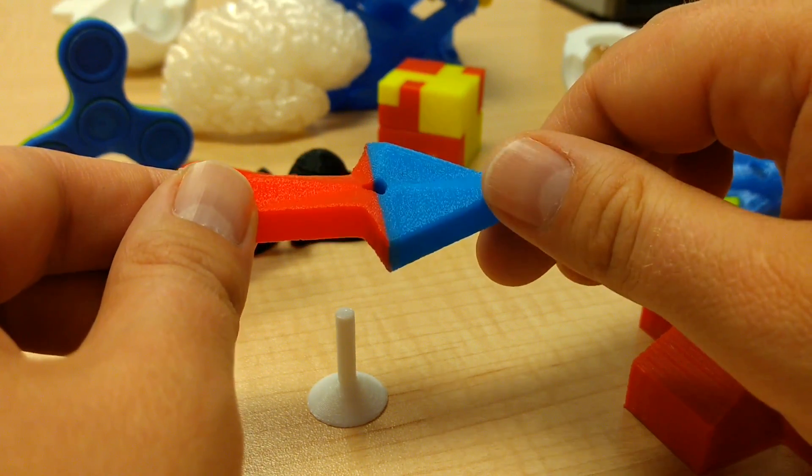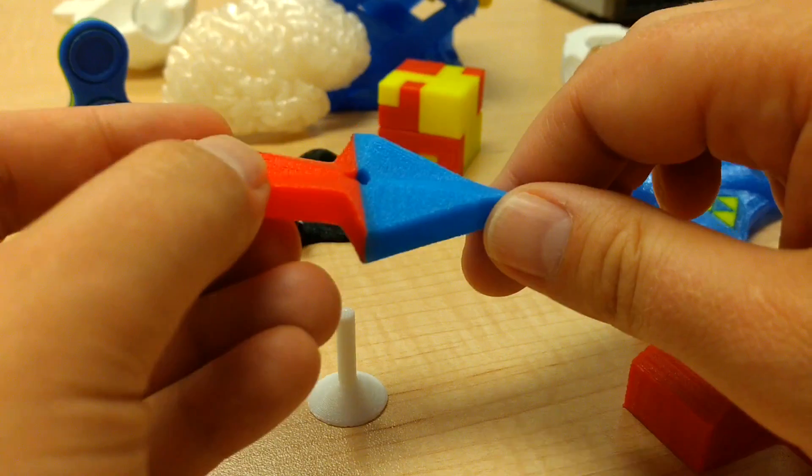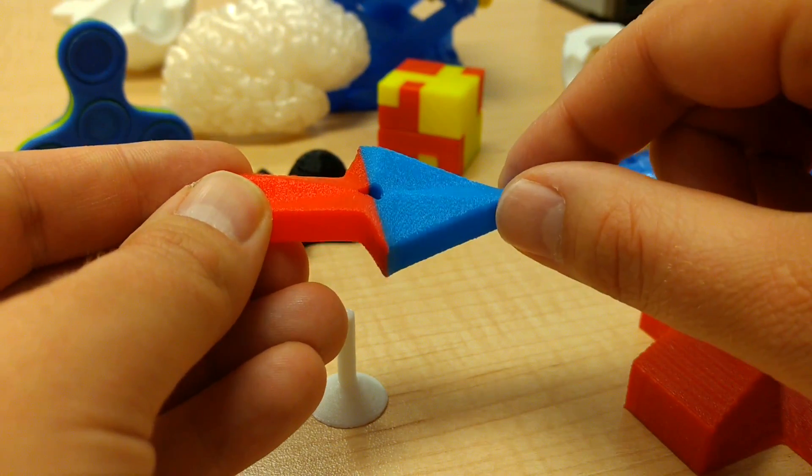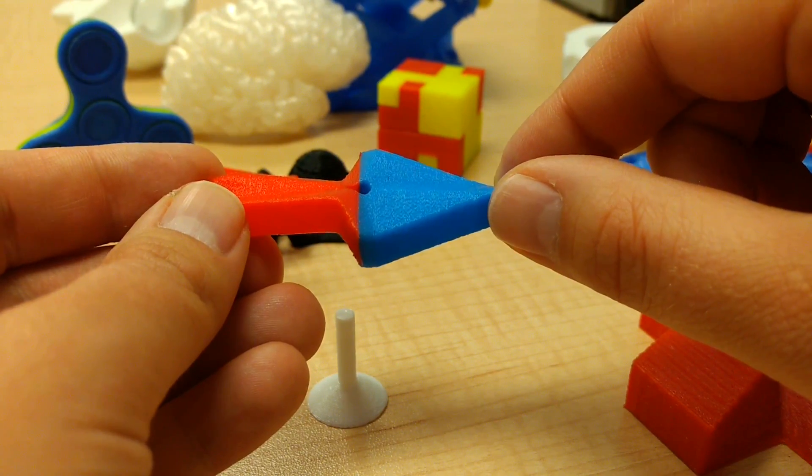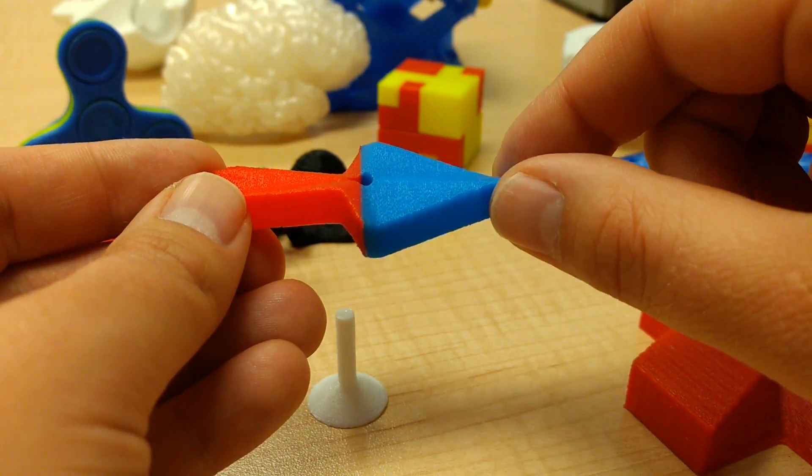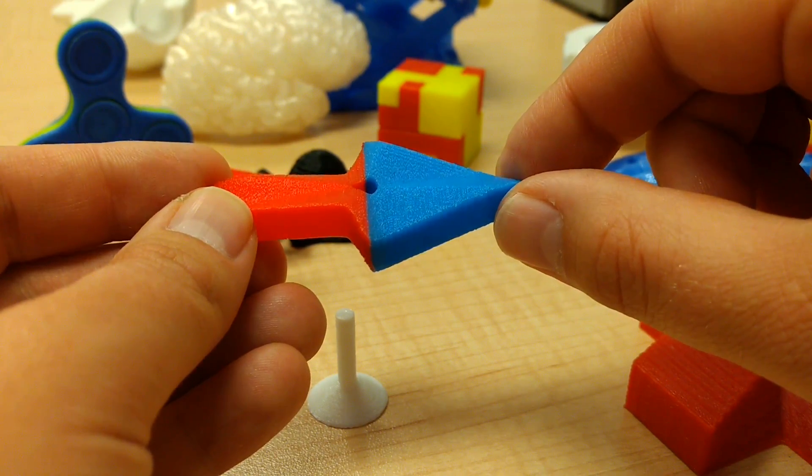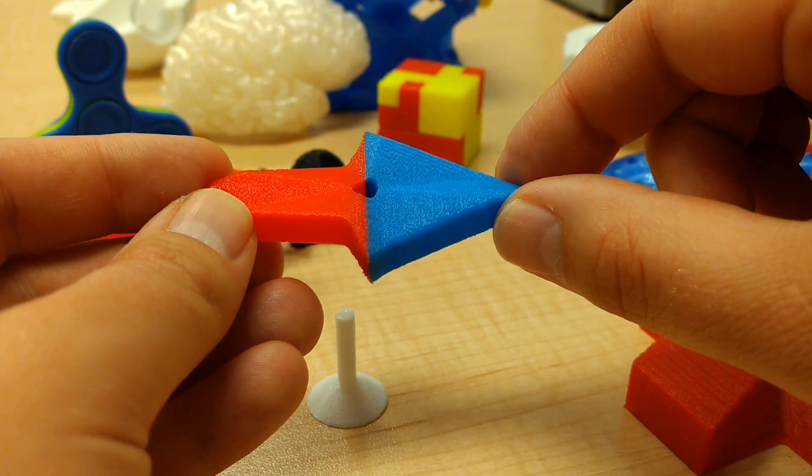And so what we're using is this balance of these angles that are on here and how our visual system interprets those angles. And we can use that to trick or utilize what we've trained ourselves to see when we see those angles and those light reflections.